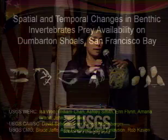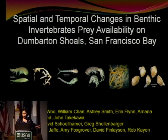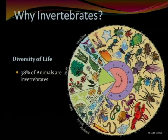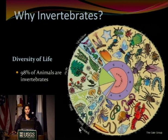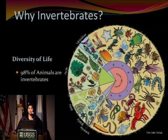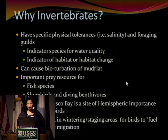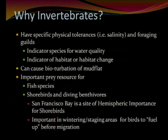Why do we study invertebrates? Partially because they make up so much of the diversity of life. Here we have a diversity of life wheel — 98% of animals are invertebrates. Jan set this up really well regarding the functional aspects: invertebrates have specific physical tolerances and foraging guilds which make them great indicators for water quality and habitat change.